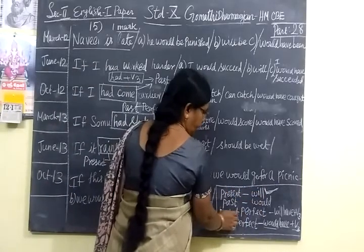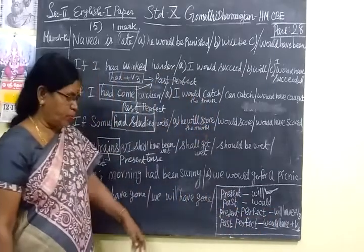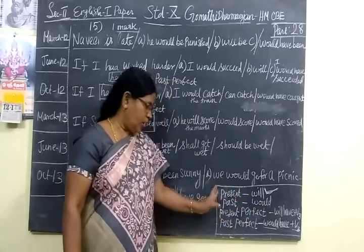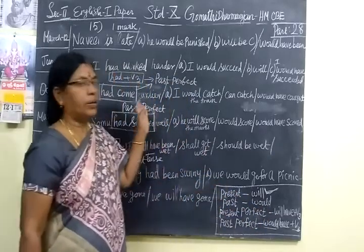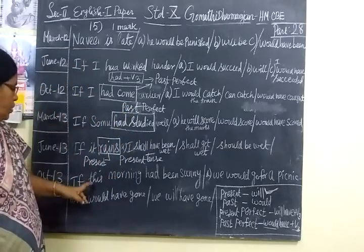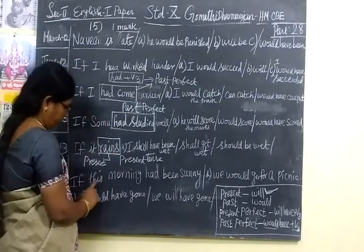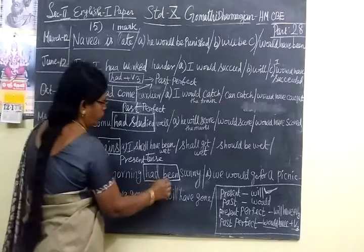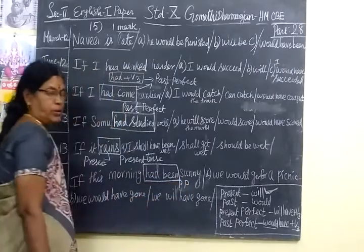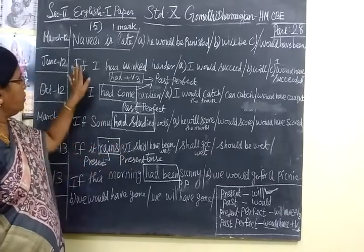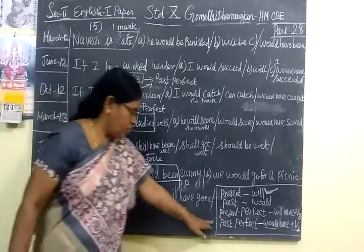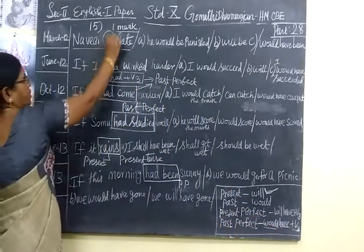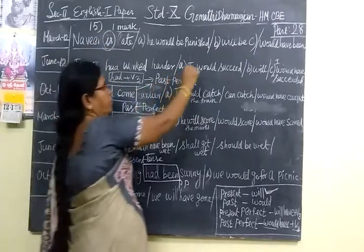Past tense means you are choosing 'would.' Present perfect means 'will + have + verb 3.' Past perfect means 'would + have + verb 3.' In normal conditions, you can definitely get one mark under this topic. We come to the last one: 'If this money had been...' — this also uses 'had + verb 3,' so this is also past perfect.